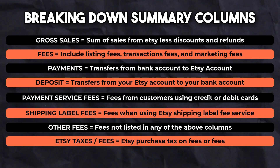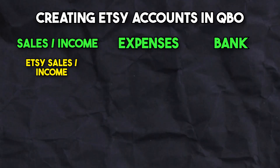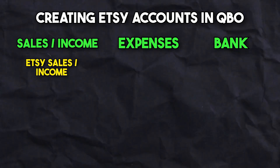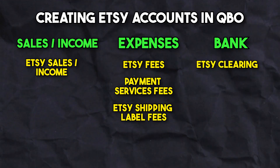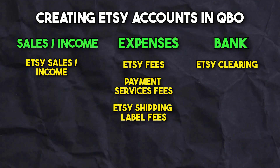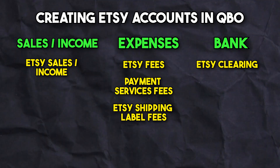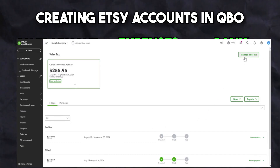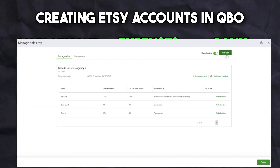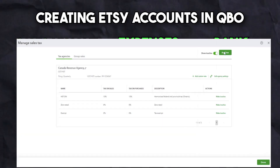Let's now create these accounts in QuickBooks. Since the sales account will most likely come with your accounting software, we will only create the following accounts: Etsy fees, payment services fees, shipping label fees, and an Etsy clearing account — which is basically a bank for Etsy. We do not have to create an account for payments or deposits, as these are related to the Etsy clearing account. We also do not have to create an account for Etsy taxes, as you will need to do so using the accounting software's tax module. For QuickBooks users, this means turning on the taxes module and creating the appropriate tax accounts based on your province or state.